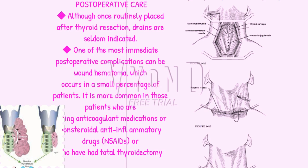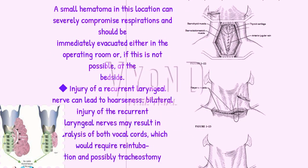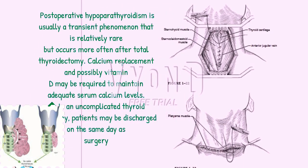Postoperative care: although once routinely placed after thyroid resection, drains are seldom indicated. One of the most immediate postoperative complications can be wound hematoma, which occurs in a small percentage of patients. It is more common in those taking anticoagulant medications, non-steroidal anti-inflammatory drugs, or who have had total thyroidectomy. A small hematoma in this location can severely compromise respirations and should be immediately evacuated either in the operating room or at the bedside. Injury of the recurrent laryngeal nerve can lead to hoarseness, and bilateral injury may result in paralysis of both vocal cords, requiring re-intubation and possibly tracheostomy. Postoperative hypoparathyroidism is usually a transient phenomenon, but occurs more often after total thyroidectomy. Calcium replacement and possibly vitamin D may be required to maintain adequate serum calcium levels.